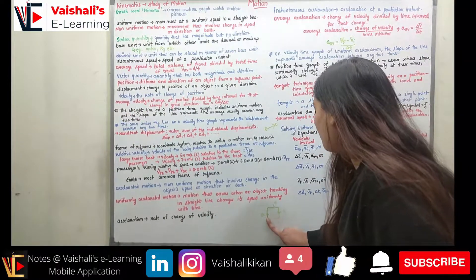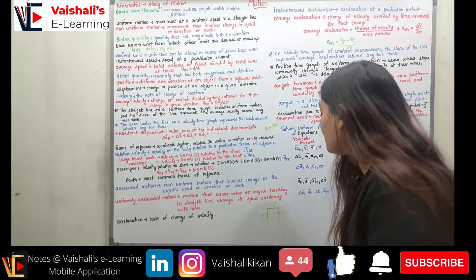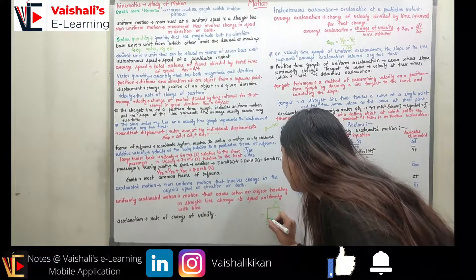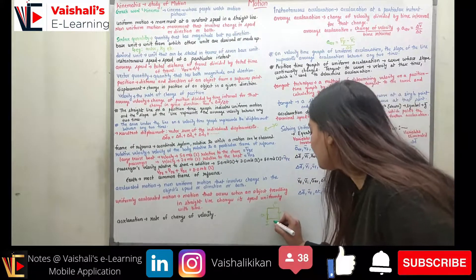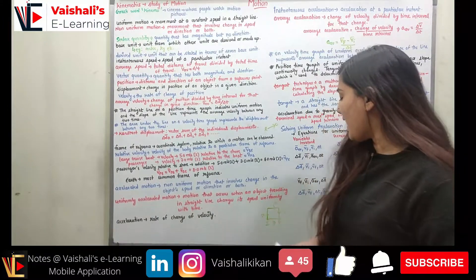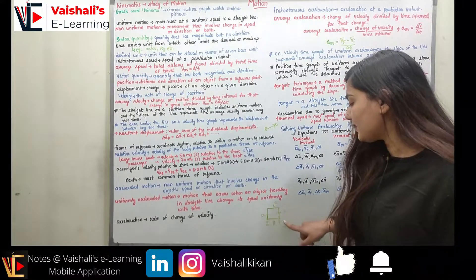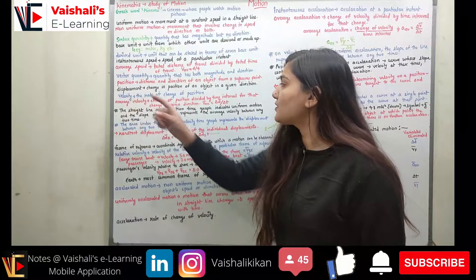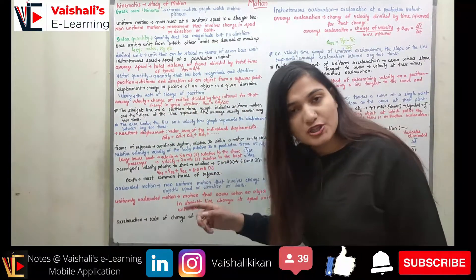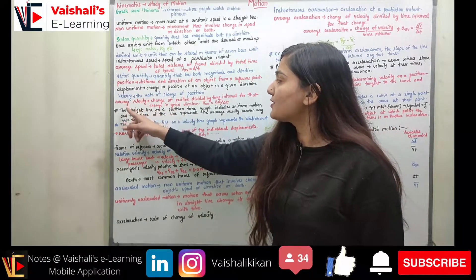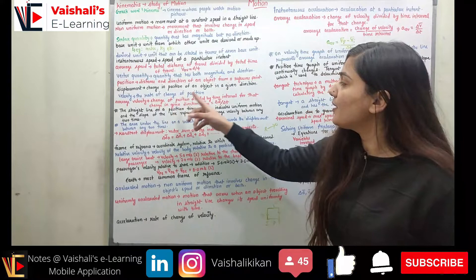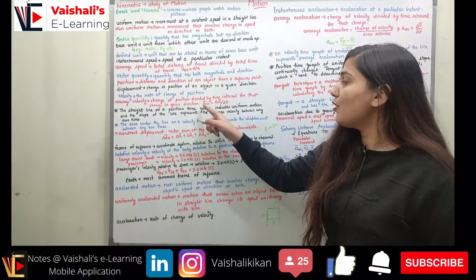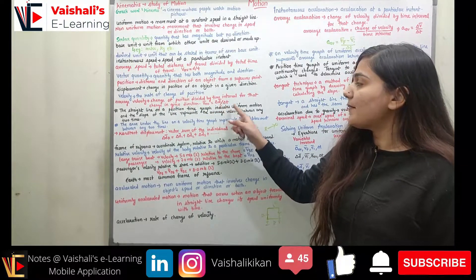If instead you stop at a midpoint F, the displacement is the vector from initial point I to final point F, with magnitude A and direction from I to F. Velocity is the rate of change of position. Average velocity is the change in position (displacement) divided by the time interval. It can be written as v_average = ΔD / ΔT.